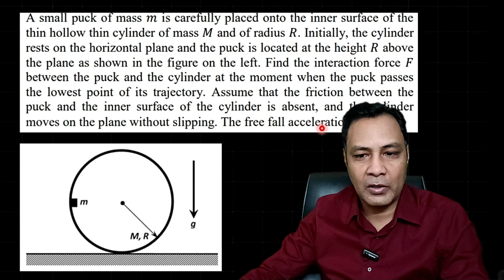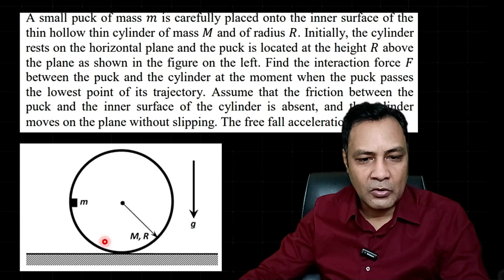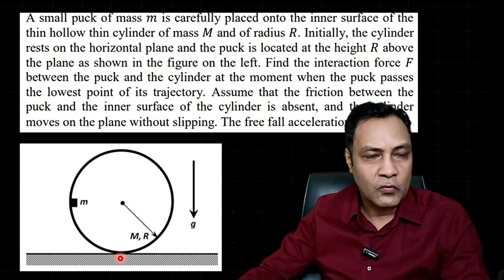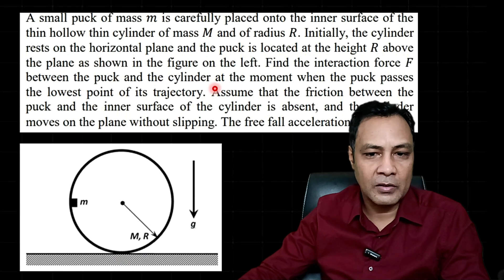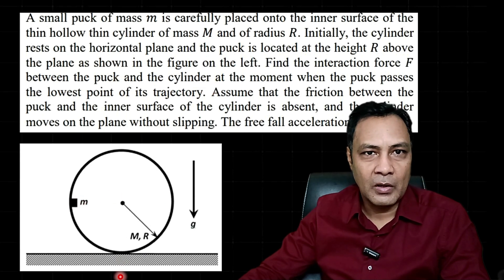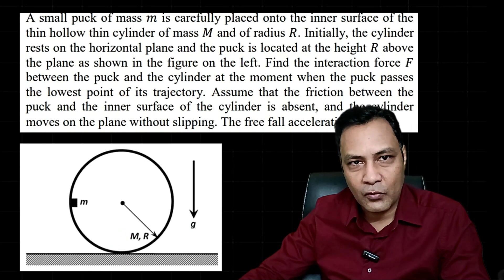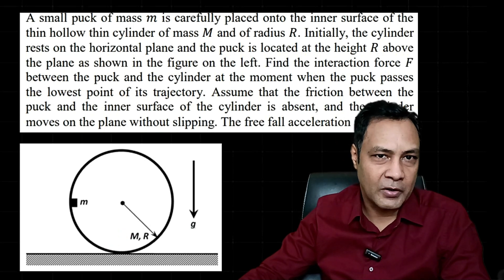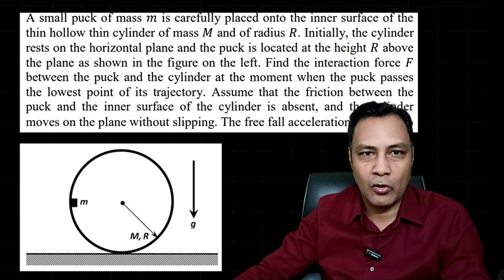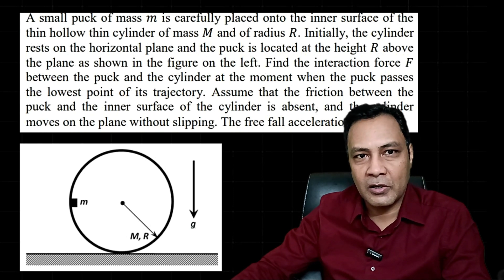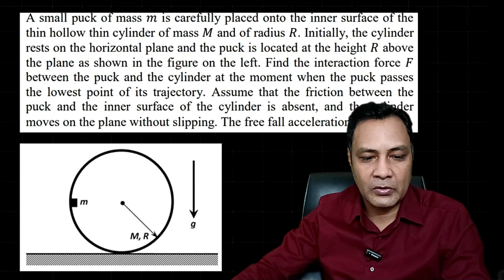The free fall acceleration is g. We have to find the force of interaction between the puck and the cylinder when the puck reaches the lowest point. There is no friction between the puck and the cylinder, so the force of interaction is only the normal reaction. Basically we have to find the normal reaction between the puck and the cylinder when the puck reaches the lowest point.